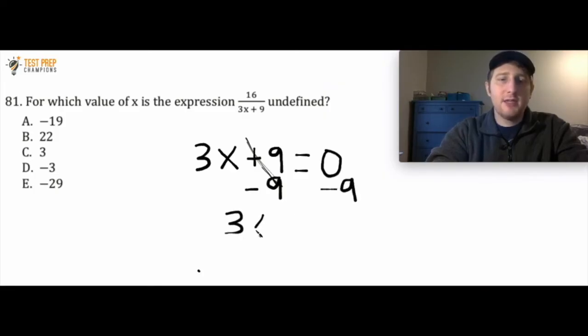So if I rewrite this I have 3x equals negative 9 and it's negative 9 because I had to do 0 minus 9.